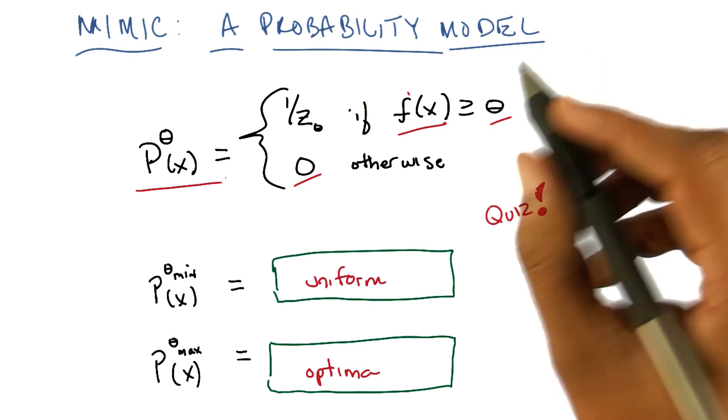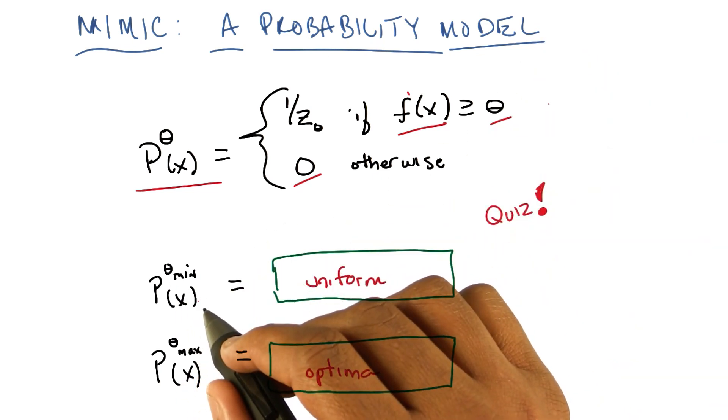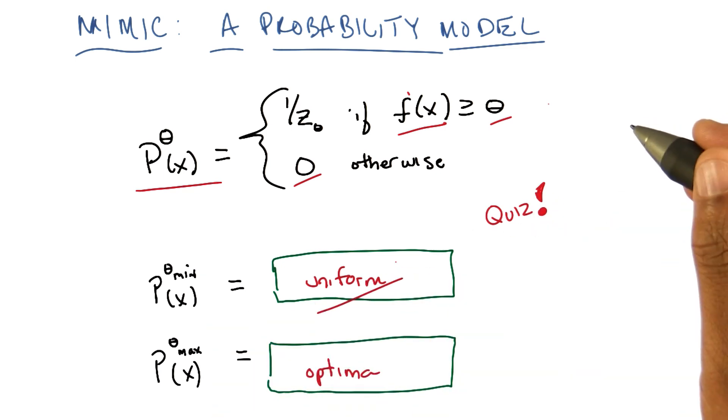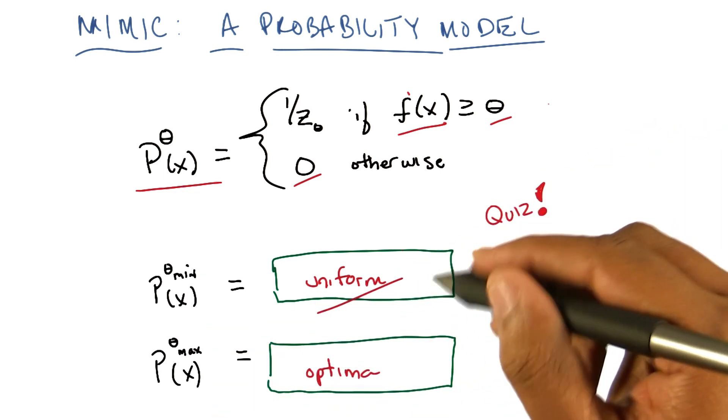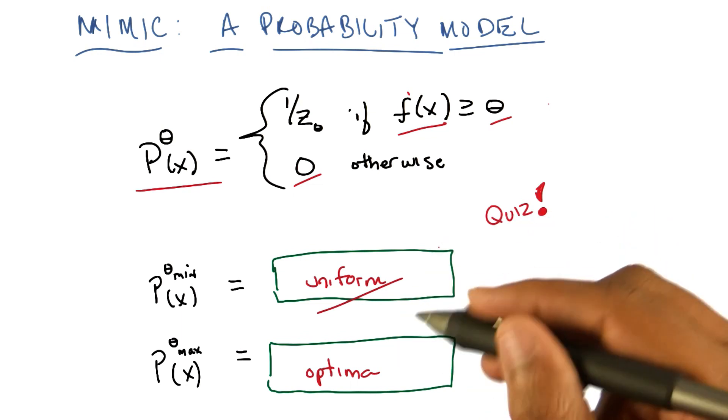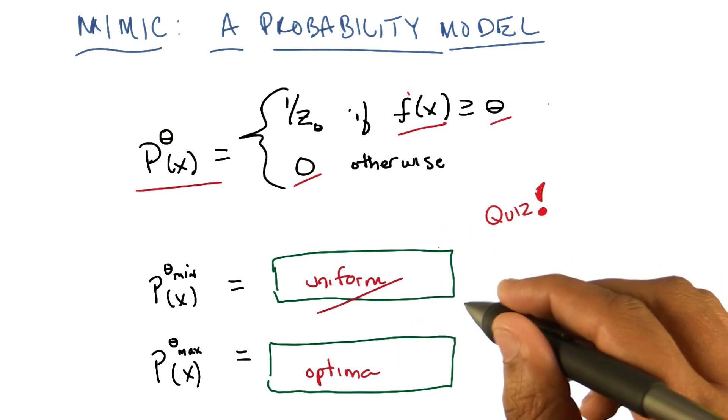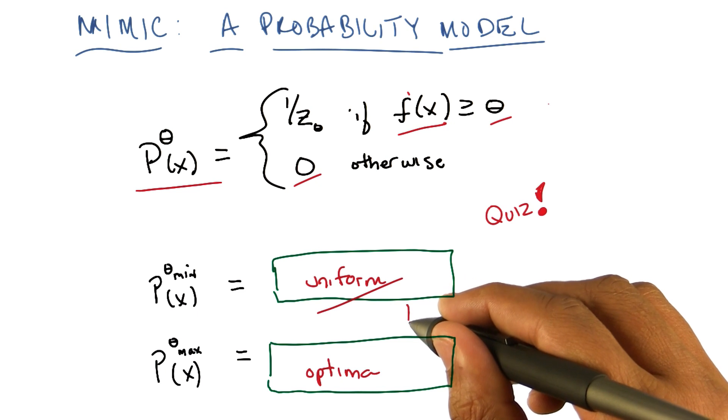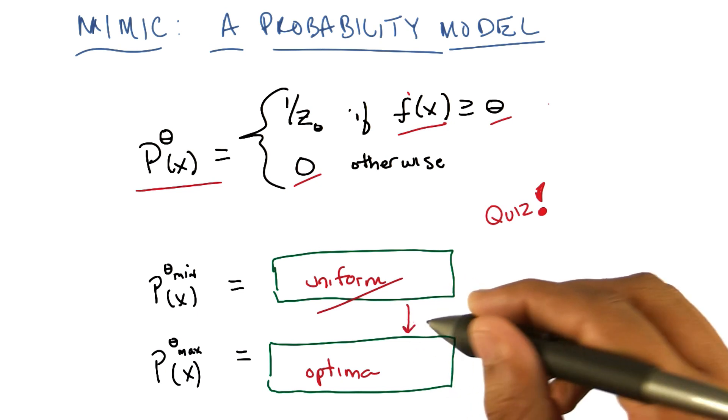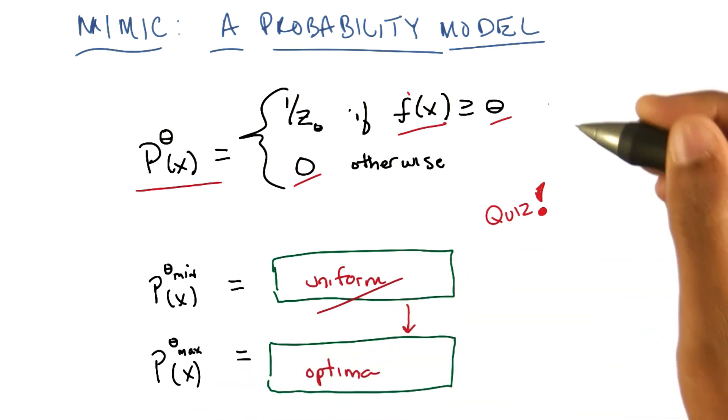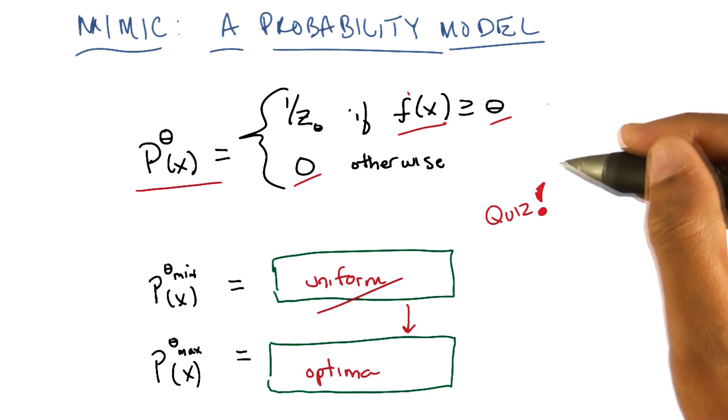We're going to start out with p sub theta min of x, which is the uniform distribution. So we're going to sample uniformly from all of the points and then somehow use those points to do better and better and better estimates until we get from uniform to a distribution of only the optimal points. And that's the basic idea.